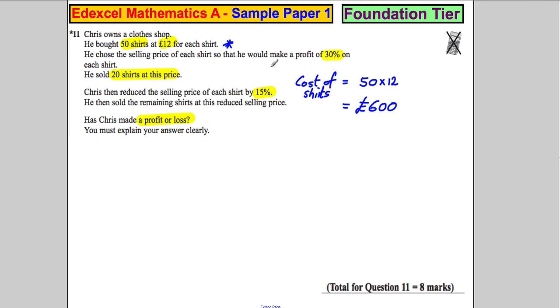He chose the original selling price 30% extra on each shirt. So a shirt costs £12. So 10% of that must be £1.20. So 30% must be 3 times this, which is £3.60.